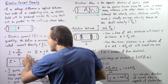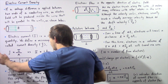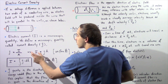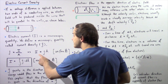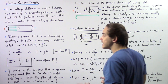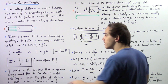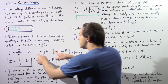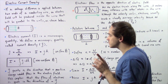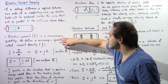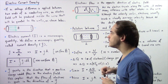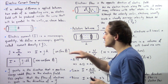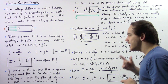We can rearrange this equation to get the following result: our electric current I is given by taking the product of the area A and the current density j. This equation only works as long as our electric field produced within our conducting wire is assumed to be uniform.